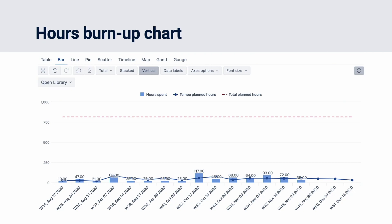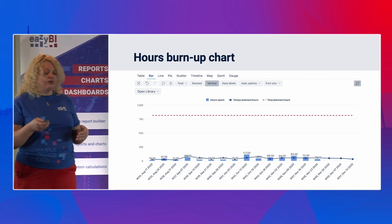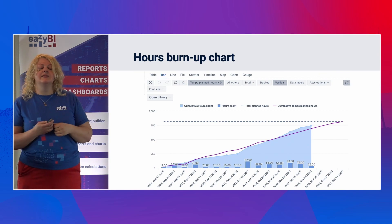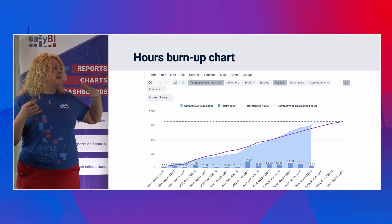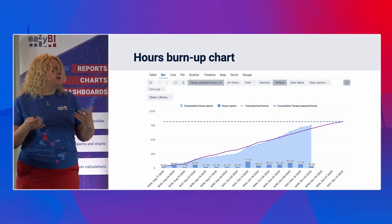We also have imported data from Tempo Planner, and you can analyze project progress based on what you have logged, what you have planned, and how it goes. You add logged hours from Tempo worklogs and planned hours from Planner on a weekly basis. Then, using standard calculations like trend lines and cumulative sums, you can build a nice burn-up chart. All those measures are built in — you just use them together, add standard report builder options, and get nice reports.